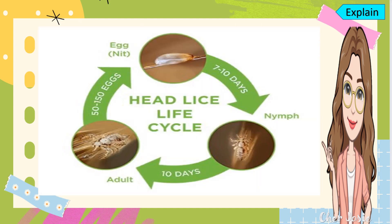Another example of incomplete metamorphosis is head lice. First, we have the egg stage. Then, after seven to ten days, it will turn into a nymph. After ten more days, it will turn into an adult. This adult louse will lay 50 to 150 eggs, and then the cycle will continue again.